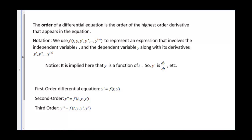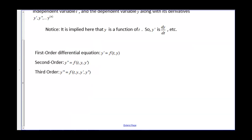A first order differential equation: y prime equals f of t, y — so it's a function of t and y. Second order: the second derivative of y is a function of t, y, and y prime. Third order: y triple prime equals f of t, y, y prime, and y double prime. What is the order of the differential equation?